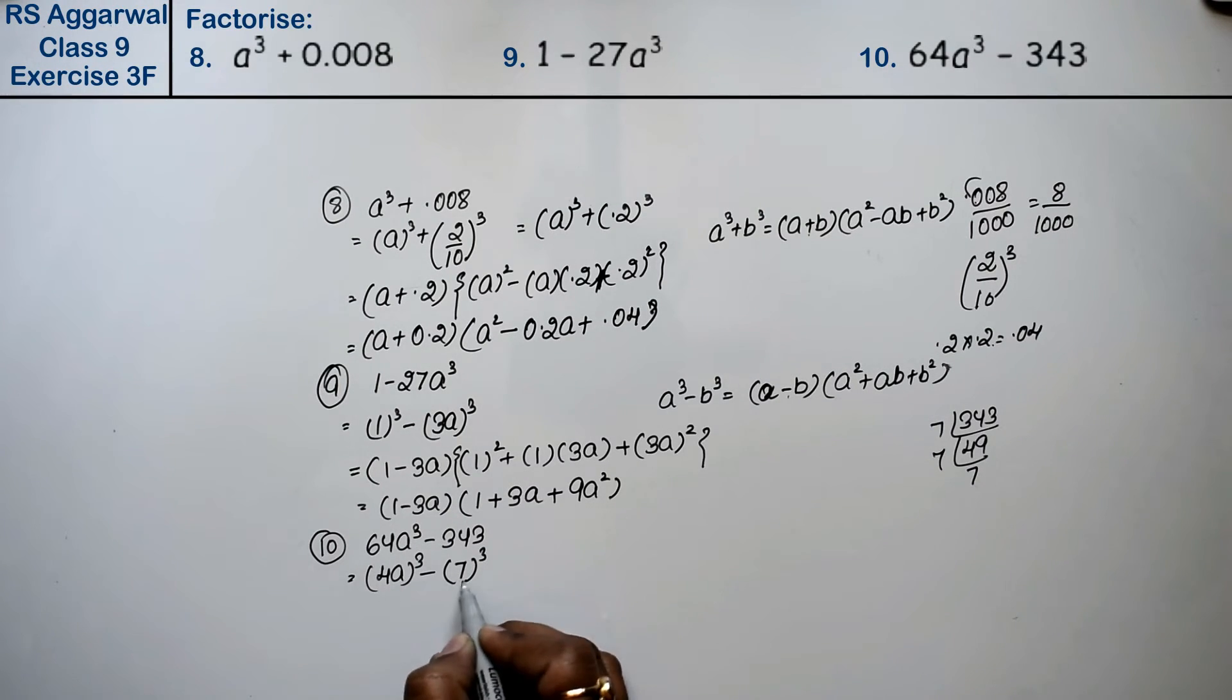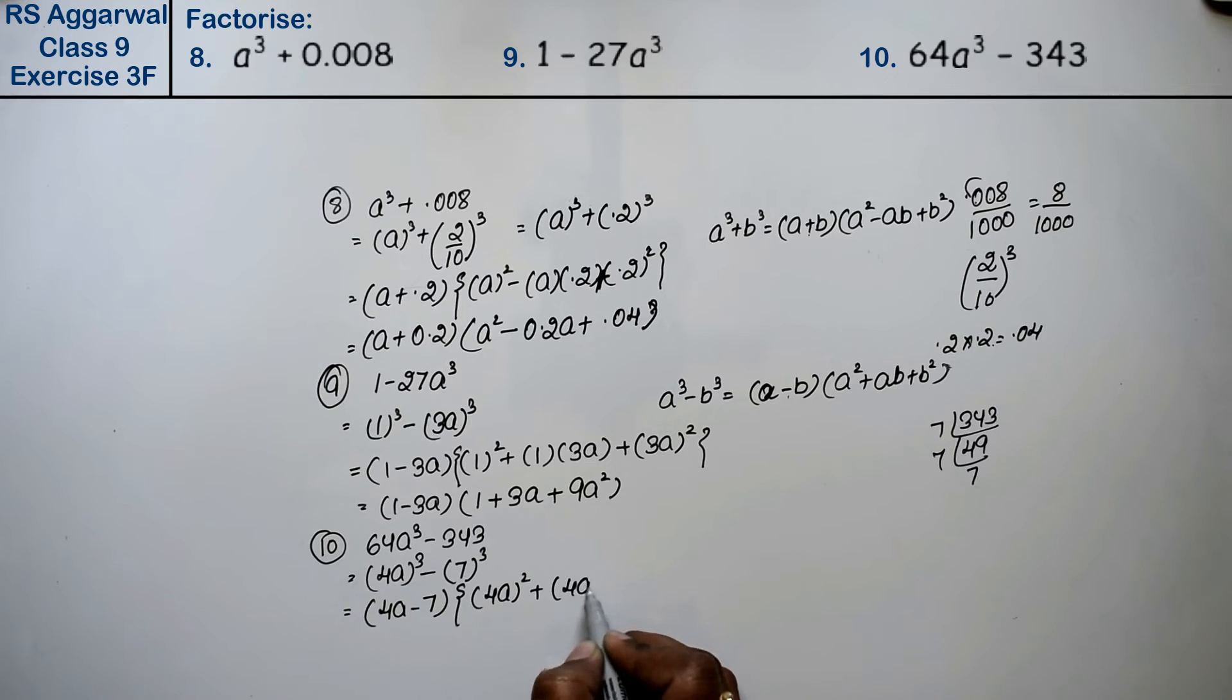Now see, this is a³ minus b³. So (a minus b), that means (4a minus 7). The formula gives us (4a minus 7)(16a² plus 28a plus 49).